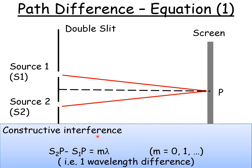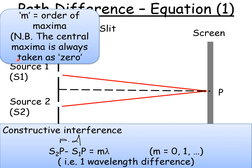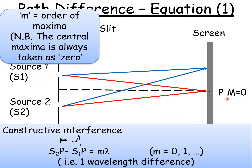From the diagram, the two lines representing the path lengths are about the same because they go to exactly the middle of the screen — they must take the same path length. For constructive interference, the path difference (written as S2P minus S1P, or PD) equals m times lambda. S2P simply means S2 going to P, S1P means S1 going to P. For constructive interference, waves must be zero wavelengths out or multiples of one wavelength apart. M represents how many wavelengths apart they are — it's called the order of the maxima, and the central maxima is always taken as zero.